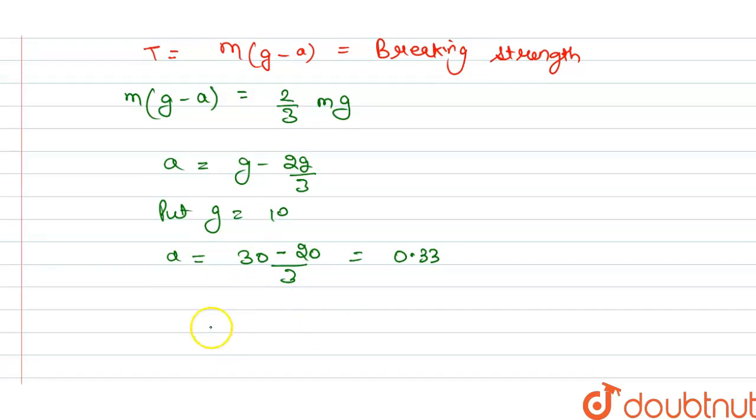Or if we find this without putting the value of g here, so we get acceleration is g divided by 3, so we get this equals to 0.33g here. So this is the solution for this question, thank you.